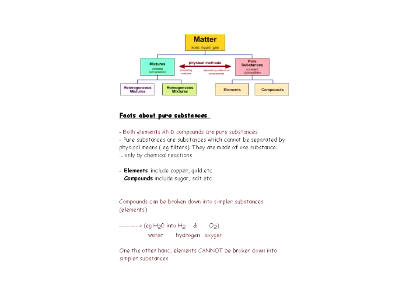Here is a diagram showing the organization of matter. Matter is broken into mixtures and pure substances. Pure substances are made up of both elements and compounds. Pure substances are substances which cannot be separated by physical means — you can't use a filter to separate out something like sugar. Pure substances are made of one substance.